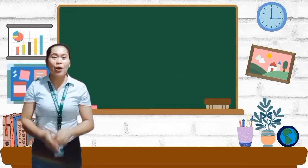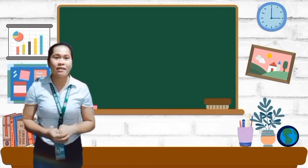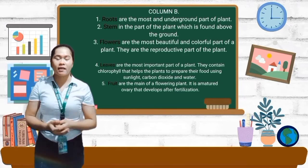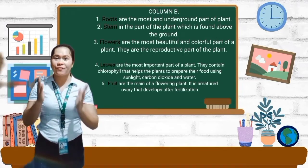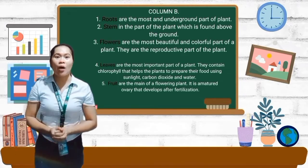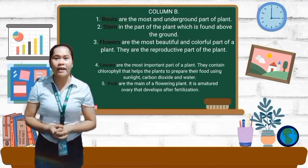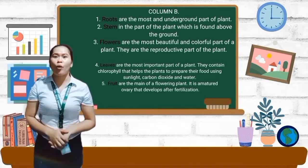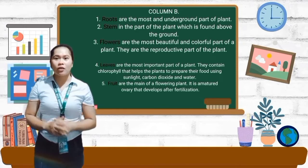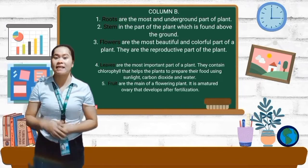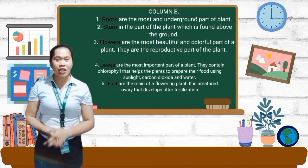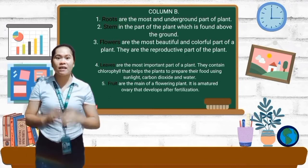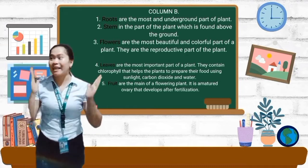So this time children, we will read it together so that we can understand it better. Number one, roots are the most underground part of a plant. Number two, stem is the part of a plant which is found above the ground. Number three, flowers are the most beautiful and colorful part of a plant — they are the reproductive part of a plant. Number four, leaves are the most important part of a plant; they contain chlorophyll that helps the plants to prepare their food using sunlight, carbon dioxide, and water. Number five, fruit are the main of flowering plant — it is a matured ovary that develops after fertilization. Okay class, understood?